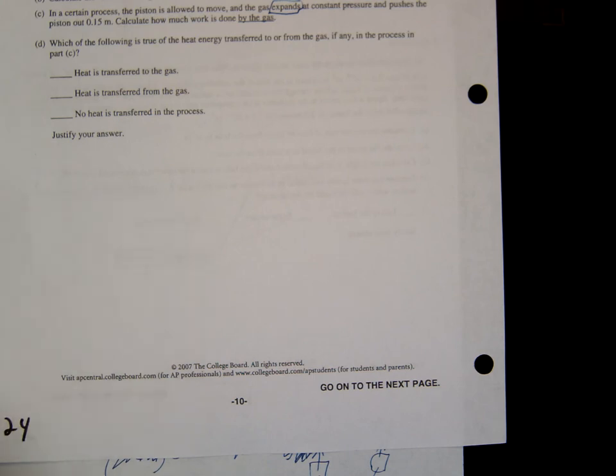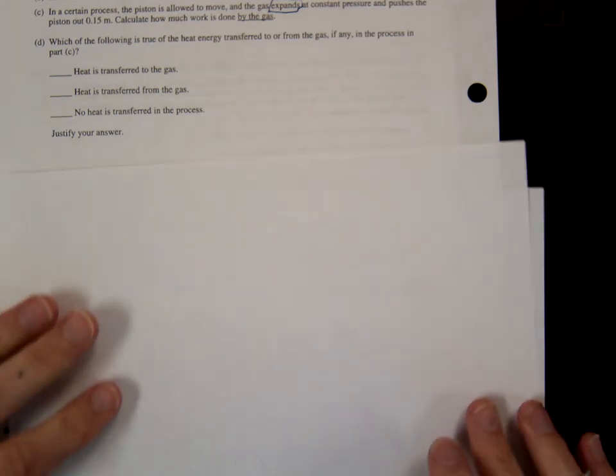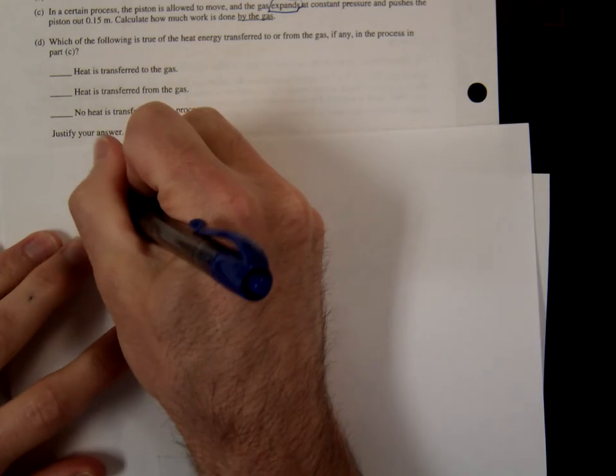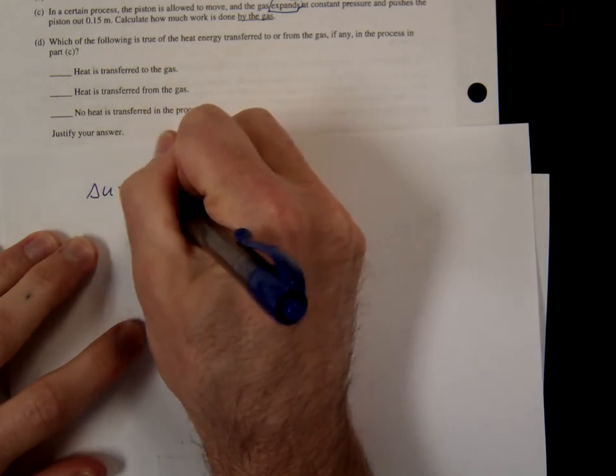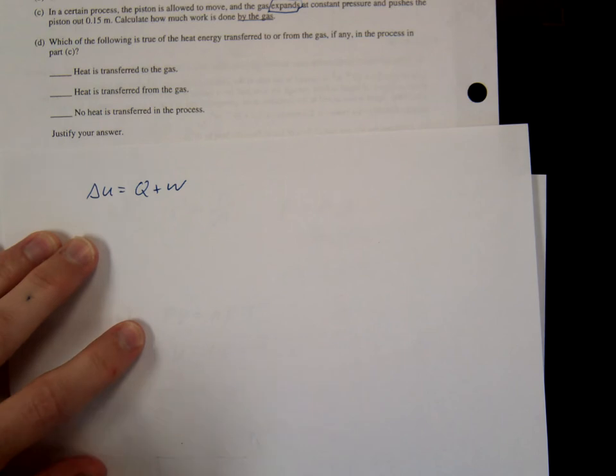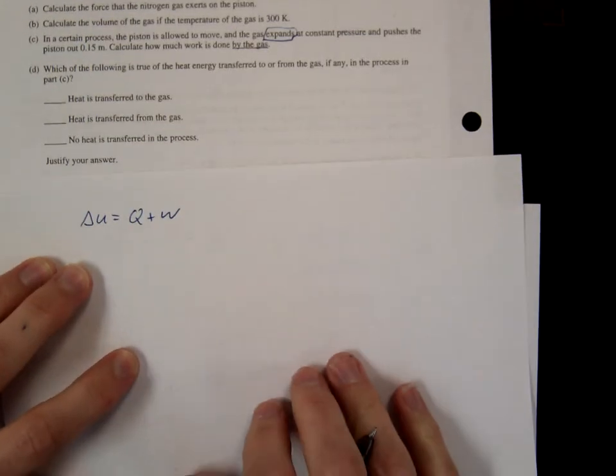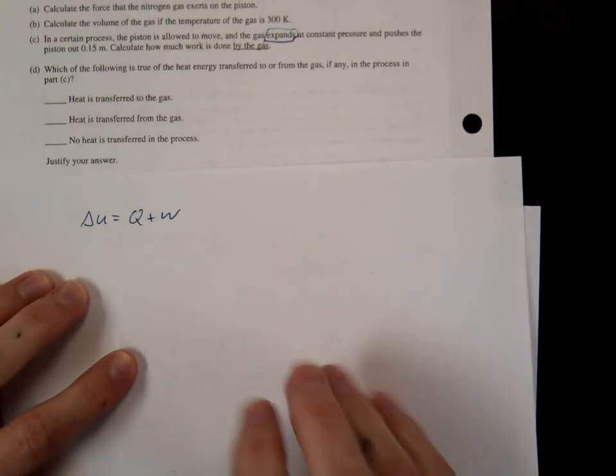All right. Is heat transferred to or from the gas? And how do you know? So let's just do the justification. And by doing the justification, we will come up with the answer. So the key thing when doing these justifications is you should be using delta U equals Q plus W. That's our law of thermodynamics, right? First law.